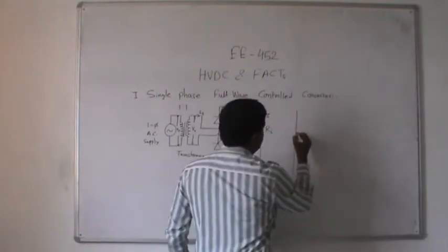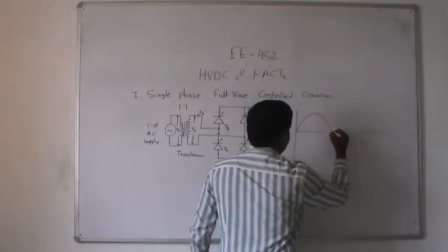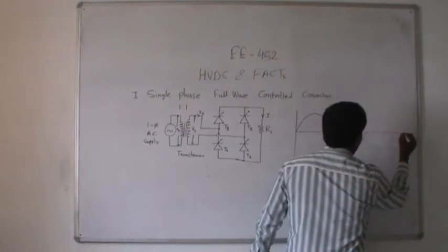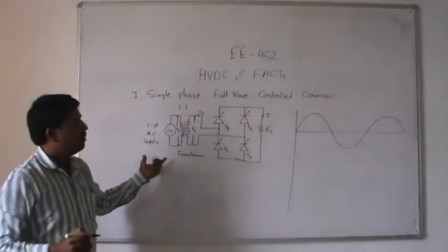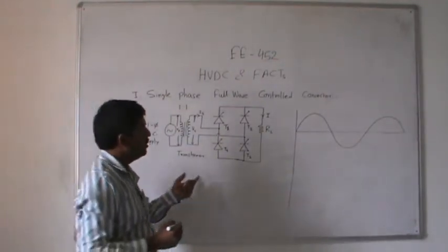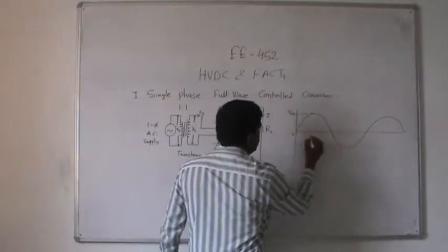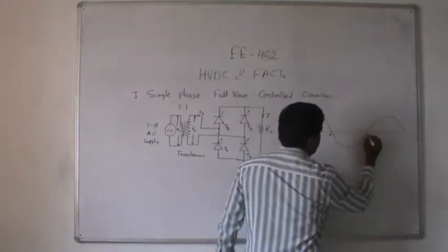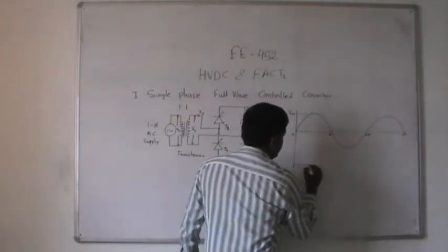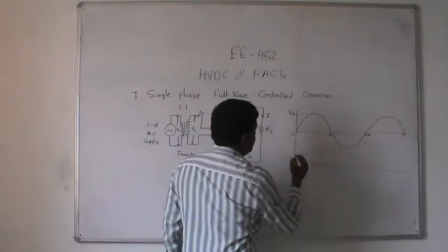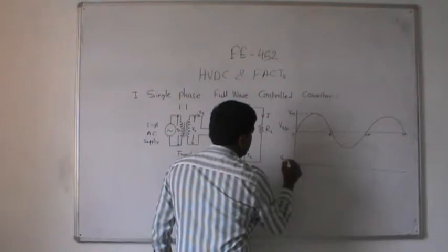How is AC converted into DC? The alternating current is converted into direct current. This is the AC voltage waveform, where Vm is the maximum voltage. The input voltage and output voltage waveforms will be compared.